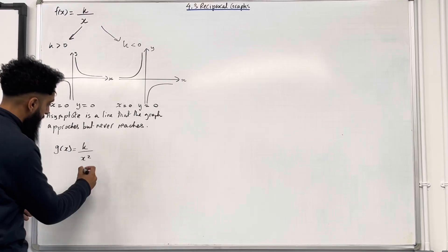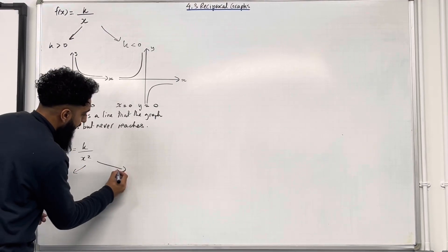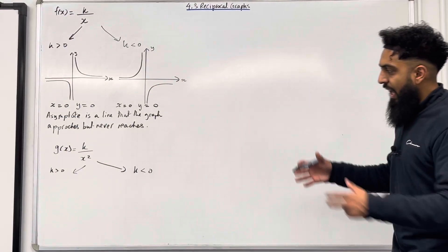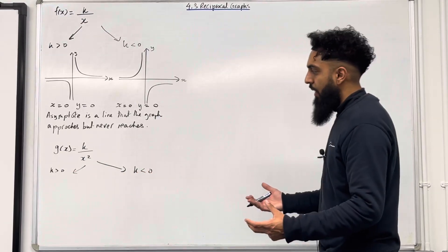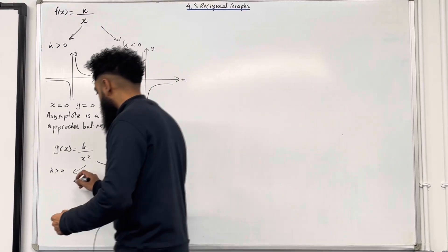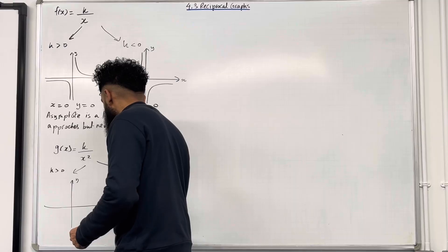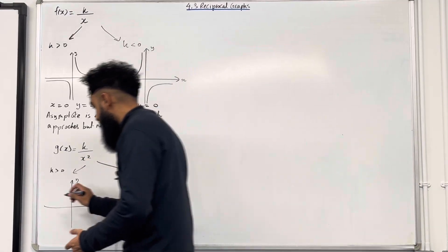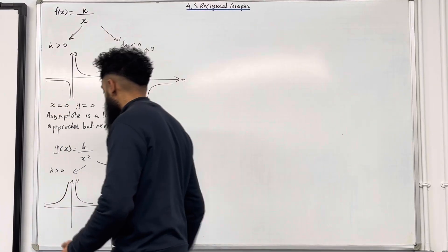There are two scenarios. The first scenario, when k is greater than 0. The second scenario, when k is less than 0. Let's look at the first scenario: k is greater than 0, that is when the numerator is positive. What will the graph look like? Well, it will look something like this. I've got my y axis and my x axis, and in this scenario the graph will take the following shape, as you can see.